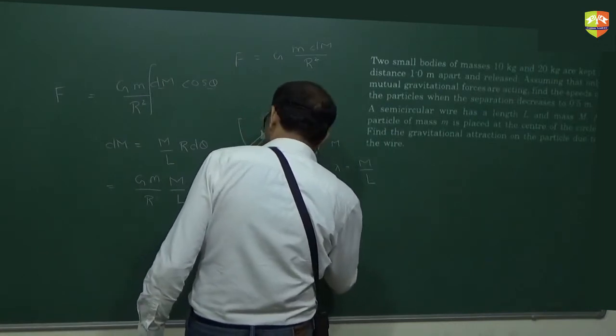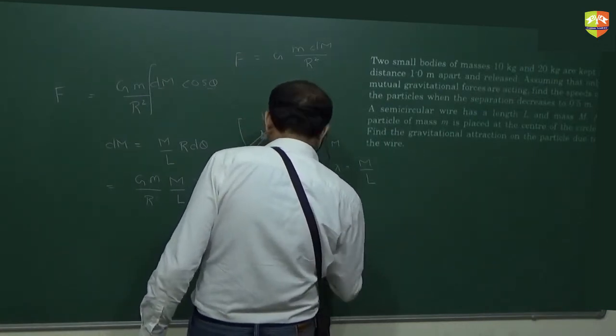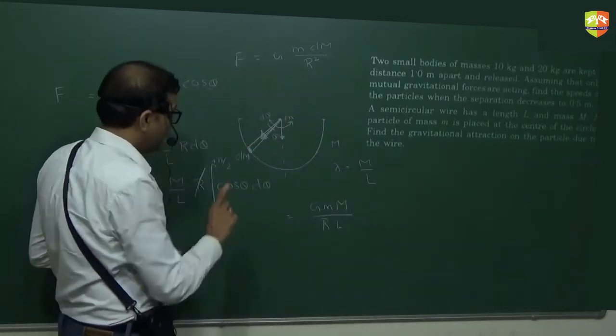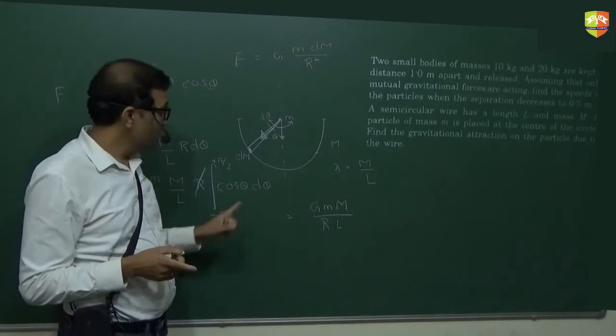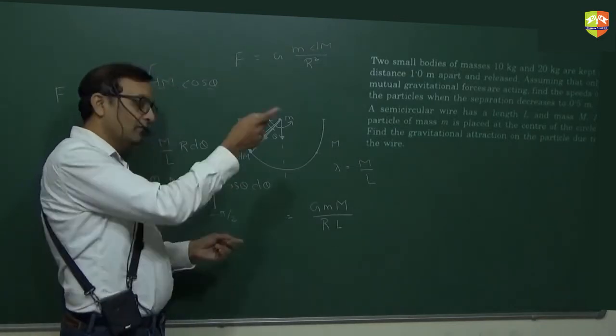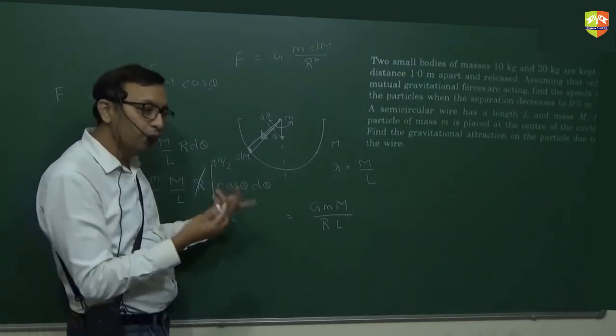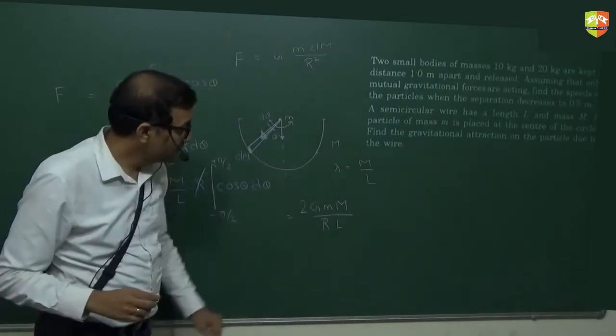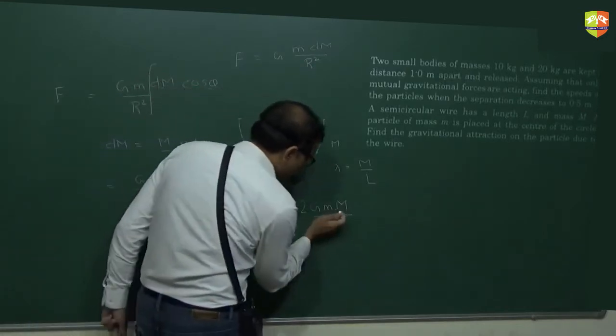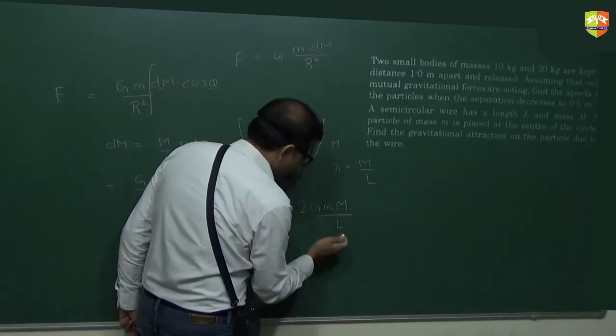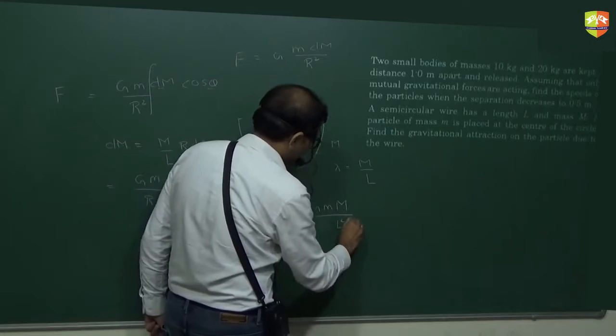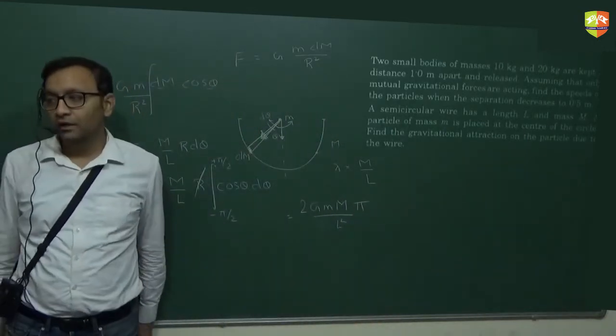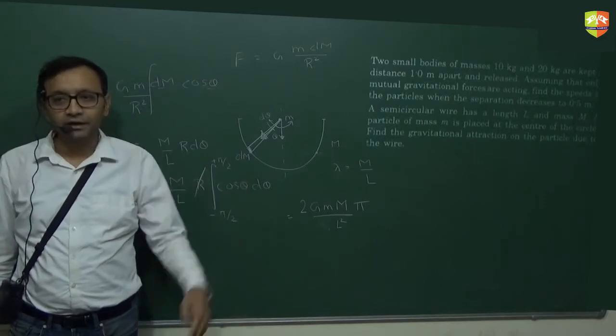What is the answer? 2 g small m capital M by r l. This will be integral cos theta is sin theta. Sin pi by 2 minus sin of minus pi by 2 will be 2. So 2 will come here. And r is l by pi. So this is the answer. Direction also will tell. It is downwards.